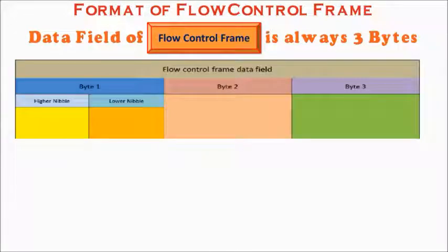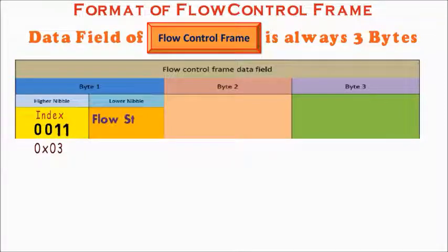The higher nibble of MSB is the index. Index for a flow control frame is 3 or 0011 in binary. The lower nibble of MSB is the flow status.